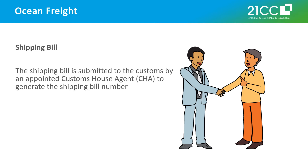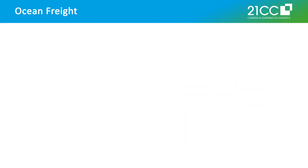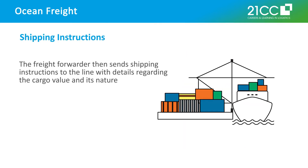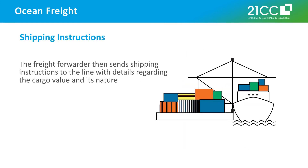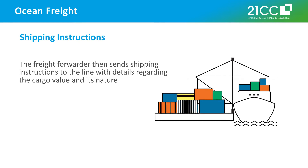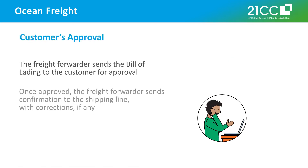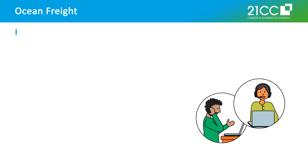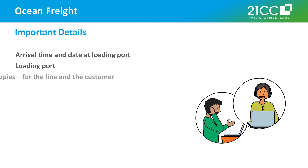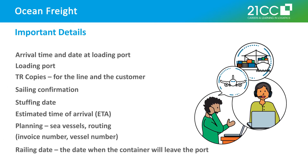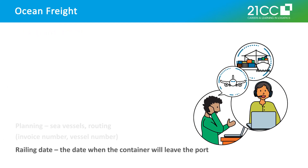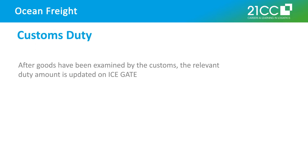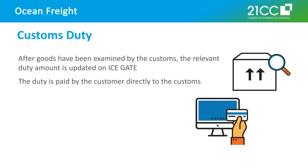To begin the process of sea export, the freight forwarder gives a quotation or the rates to the shipper or the customer on the basis of the destination for his or her approval. Once approved, the customer provides the freight forwarder all the necessary documents such as the commercial invoice, packing list, shipper's letter of instruction, and other special documents as required.